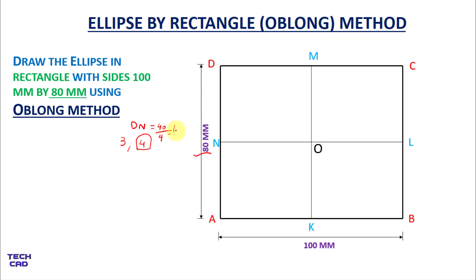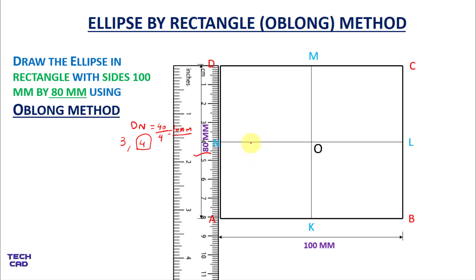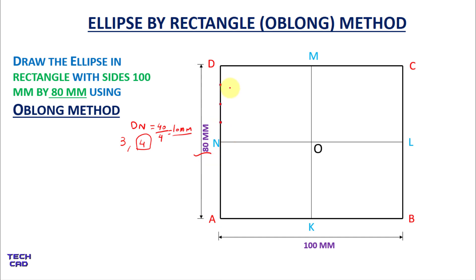This gives me 10 mm per division. So I will take a scale and mark 10 mm, then 10 mm, then 10 mm — making four equal divisions of 10 mm each. I will name these points as 1, 2, and 3.